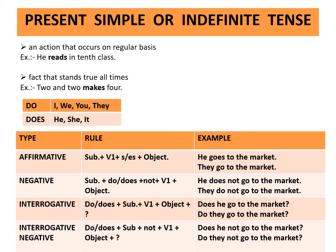Interrogative negative is one in which both a question mark and 'not' are used. Rule: do or does plus subject plus not plus first form of the verb plus object plus question mark. Example: Does he not go to the market? Do they not go to the market?